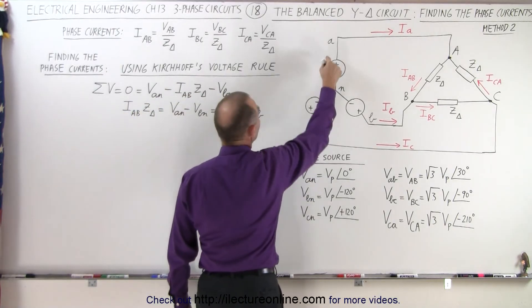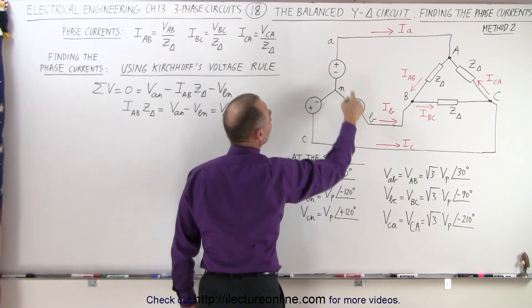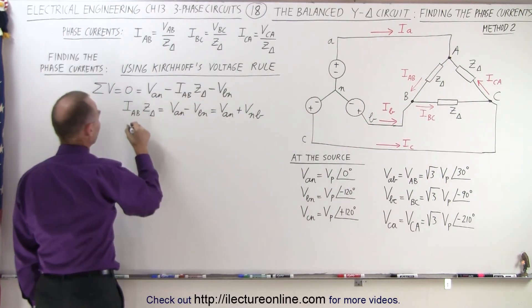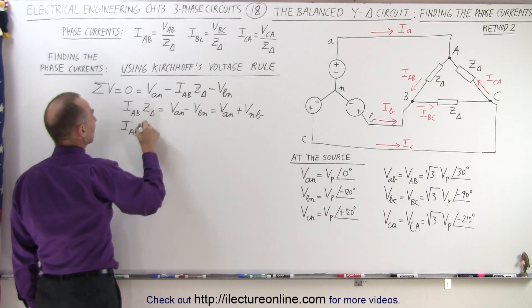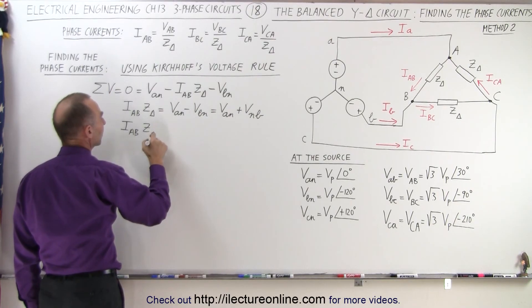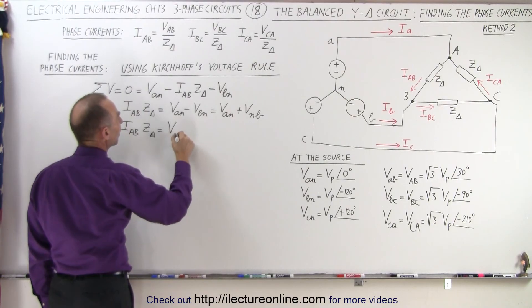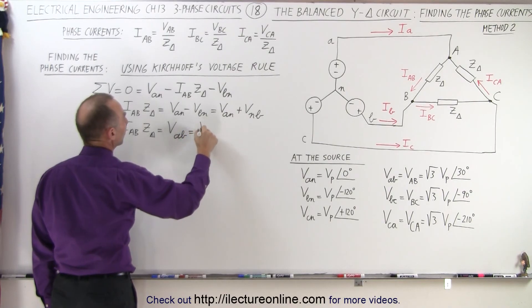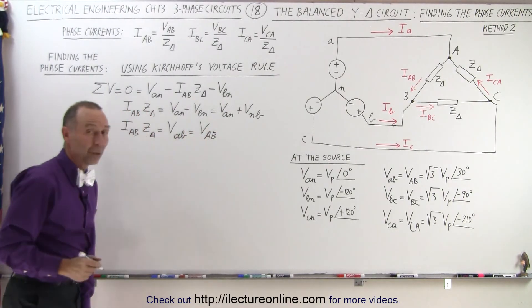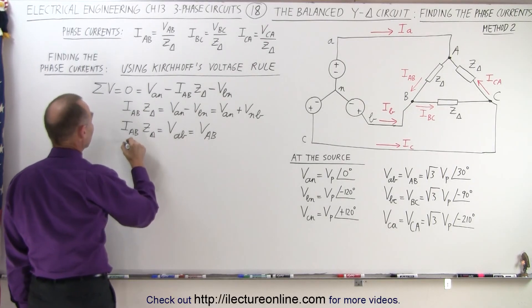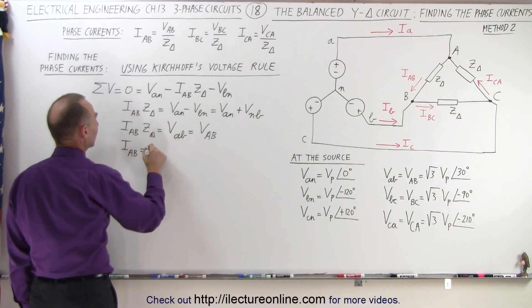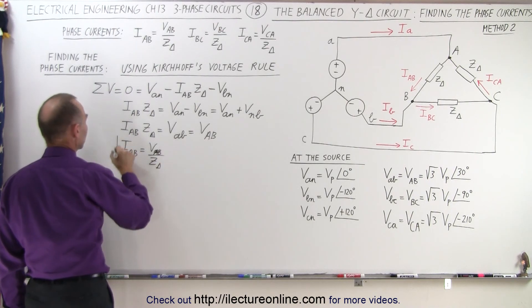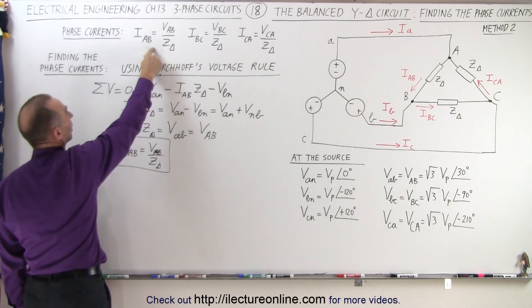If we go from VAN and then from N to B, that is the same as V from A to B, which is the same as VAB. So IAB times the impedance Z delta is equal to VAB, which is the line voltage. And finally, IAB is equal to VAB divided by the impedance of the load — the exact same result as before.